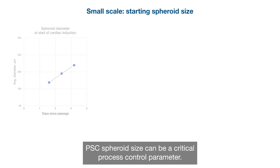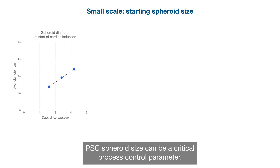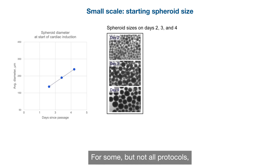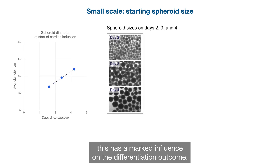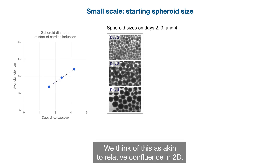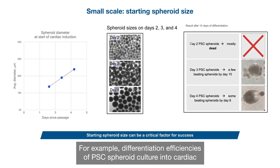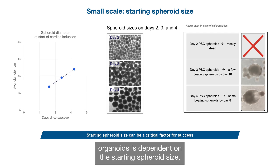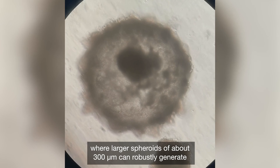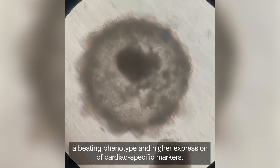At the onset of differentiation, PSC spheroid size can be a critical process control parameter. For some, but not all, protocols, this has a marked influence on the differentiation outcome — we think of this as akin to relative confluence in 2D. For example, differentiation efficiencies of PSC spheroid culture into cardiac organoids is dependent on the starting spheroid size, where larger spheroids of about 300 micrometers can robustly generate a beating phenotype and higher expression of cardiac specific markers.